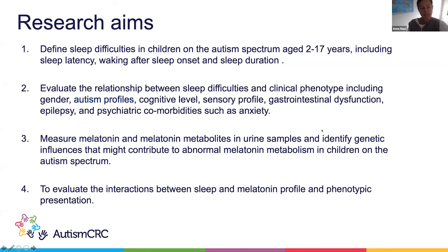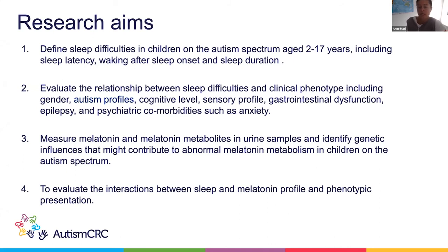Our research aims are as follows. We're firstly looking to define the difficulties that children on the autism spectrum are facing, including sleep latency, waking up to sleep onset, and sleep duration. We'll compare these alterations with non-autistic siblings and control children, and evaluate the relationship between sleep difficulties and clinical phenotypes including gender, autism profiles, cognitive level, sensory profiles, and comorbidities such as anxiety, epilepsy, and gastrointestinal dysfunction. We'll measure melatonin and melatonin metabolites in urine samples, identify genetic influences contributing to abnormal melatonin metabolism, and evaluate the interactions between sleep and melatonin profiles and phenotypic presentations.